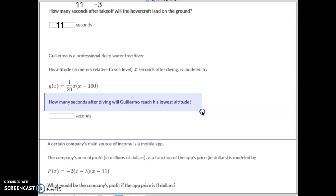They just want to know how many seconds will it be until he reaches the lowest. So they want to know what is the x-coordinate of that vertex. Well, we can know from doing zero property product that this one right here, the opposite of negative 100 will be positive 100.